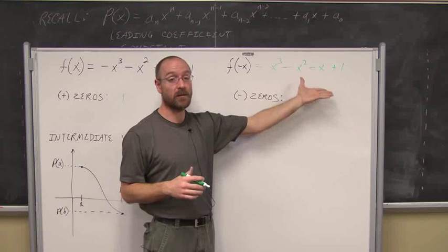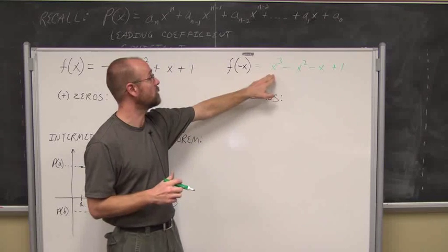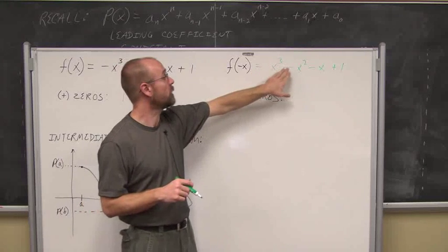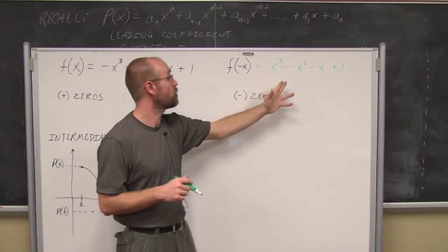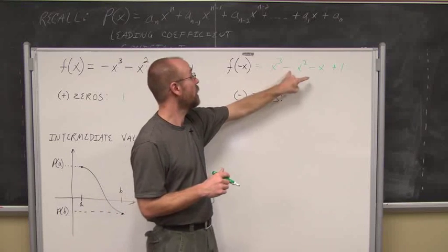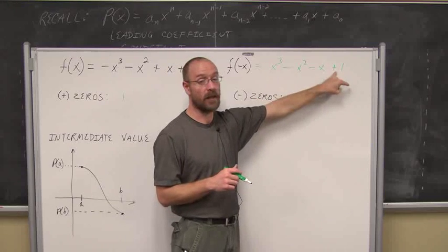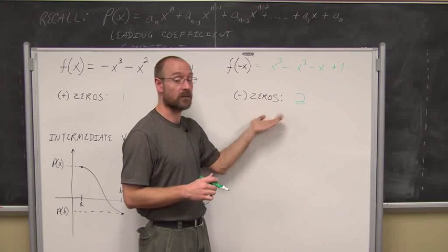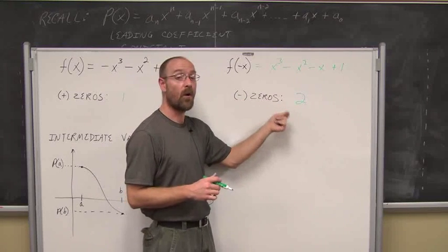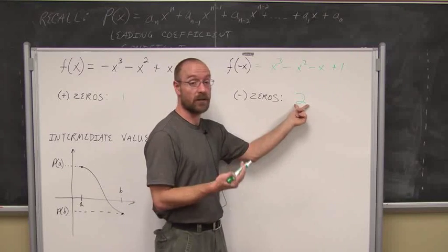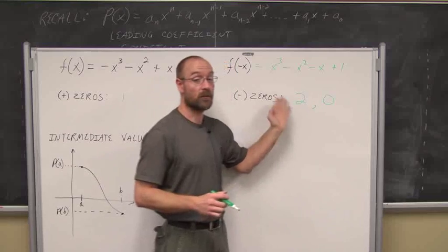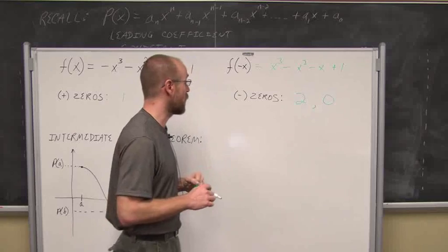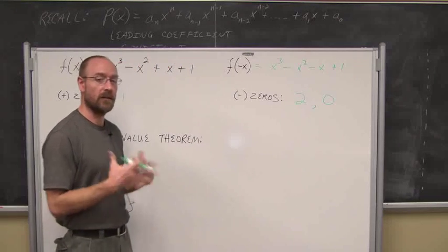By evaluating this function for a negative, we see the signs have changed. That's Descartes' Rule of Signs. The first term is positive, the next term is negative — that's one sign change. The next term is also negative, then the constant is positive — that's two sign changes. So the number of negative zeros I could possibly find is either 2 or an even integer less, which is 0. We'll either find 2 or we won't find any.